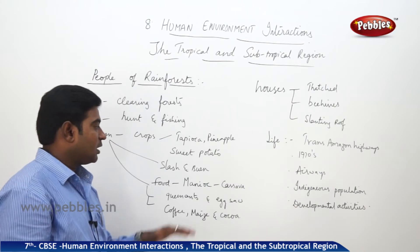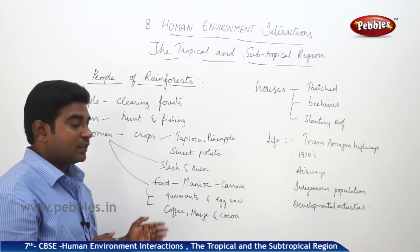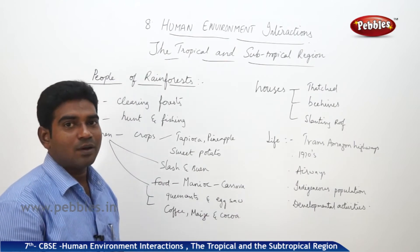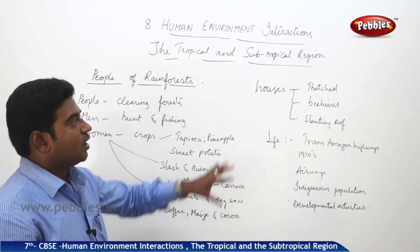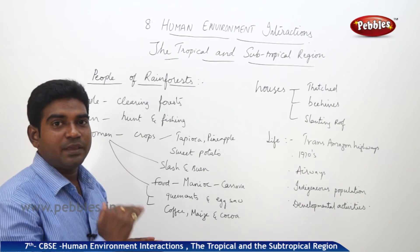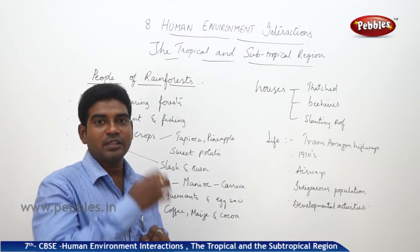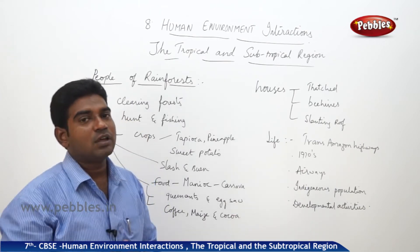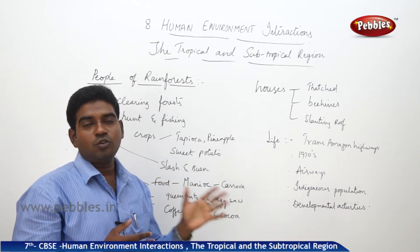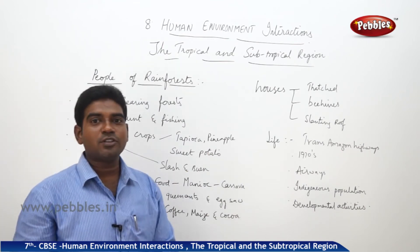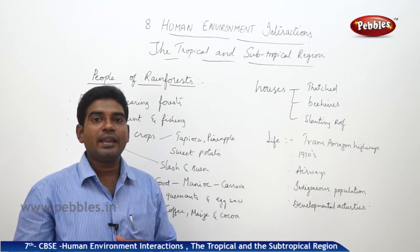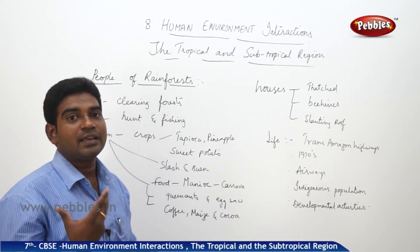The staple food of the people is manioc, also known as cassava. They also consume queen ants and egg sacks as food. The houses in the rainforest region are beehive-shaped with steeply slanting roofs to allow heavy rainwater to drain off. Earlier, the lives of Amazon people were not well known, but in the 1970s when the Trans-Amazon Highway was made, it made the Amazon region accessible to other parts of the world and development started to happen, transforming the lives of people in this region.